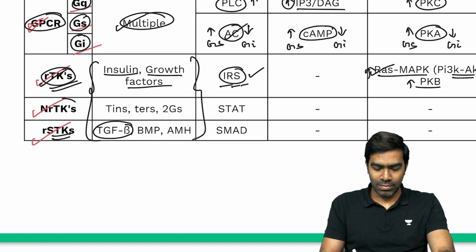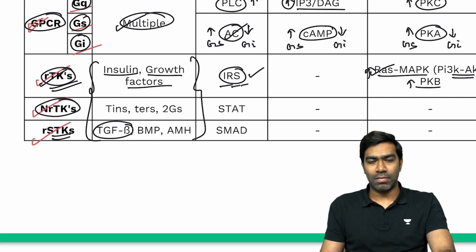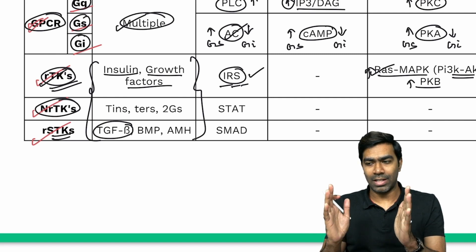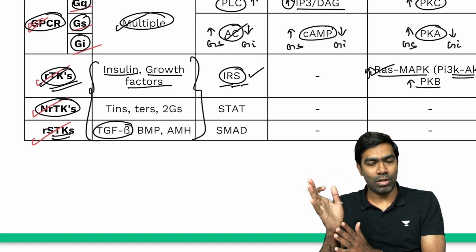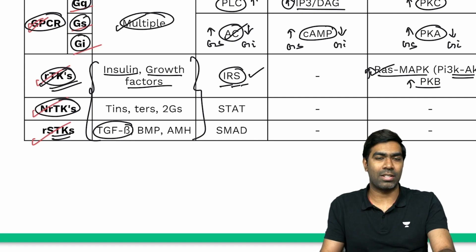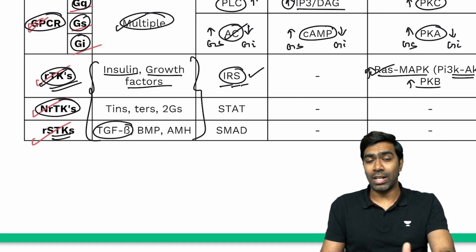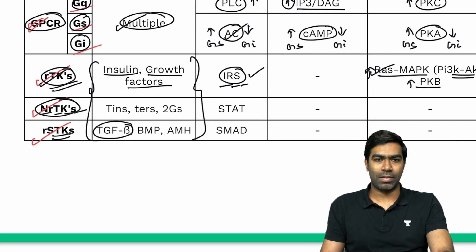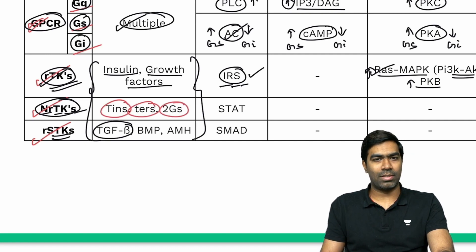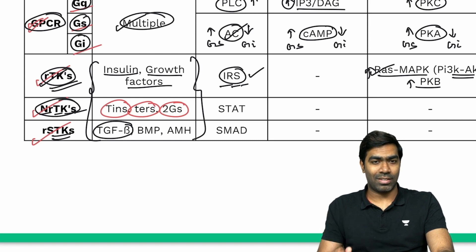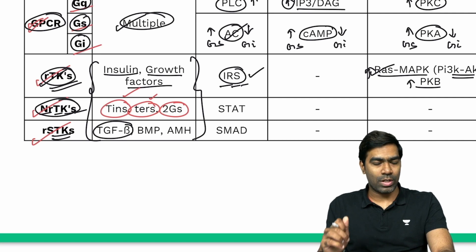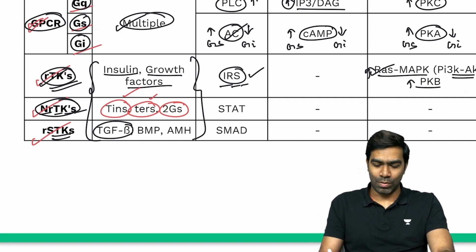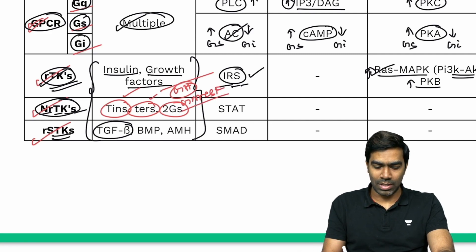NRTKs are non-receptor tyrosine kinases. After ligand binding, the receptors dimerize — they are not true receptors initially. These are famously called JAK-STAT receptors or Janus kinases. Ligands for the JAK-STAT pathway can be remembered using the mnemonic TINS, TERS, and 2Gs: TINS = prolactin, erythropoietin, thrombopoietin; TERS = interleukins and interferons; 2Gs = growth hormone and GM-CSF.